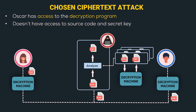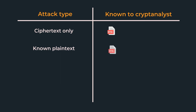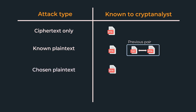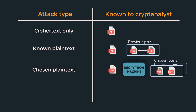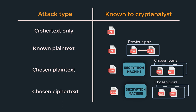Let's summarize all four cryptanalytic attacks in a table. In the ciphertext only attack, the cryptanalyst only knows the ciphertext. In the known plaintext attack, the cryptanalyst knows the ciphertext along with a previous plaintext-ciphertext pair. In the chosen plaintext attack, the cryptanalyst knows the ciphertext, the encryption machine used by Alice, and a chosen plaintext-ciphertext pair. In the chosen ciphertext attack, the cryptanalyst knows the ciphertext, the decryption machine used by Bob, and a plaintext-ciphertext pair.